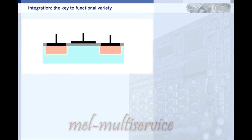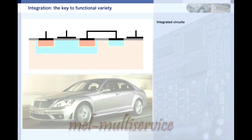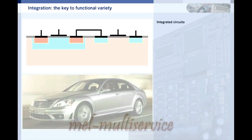Transistors, like resistors, capacitors and diodes, are discrete components and are therefore still very important. However, electronics really took off with the invention of integrated circuits, where multiple discrete components are placed on a single semiconductor crystal known as a chip.